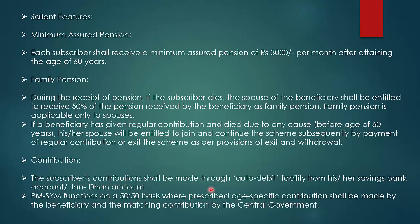How are contributions made? The subscriber's contributions shall be made through auto-debit facility from his or her savings bank account or Jan Dhan account. The government is promoting that everyone — even unorganized workers like rickshaw pullers or domestic workers — should have a bank account so that money circulates in the country directly without middlemen. PM Shram Yogi Maanadhan Yojana functions on a 50-50 basis, where prescribed age-specific contributions are made by the beneficiary and matched by the central government.